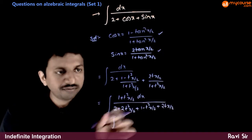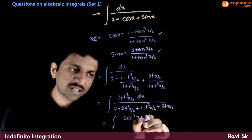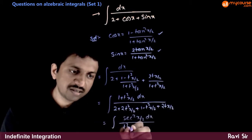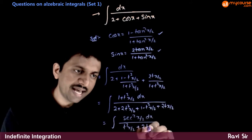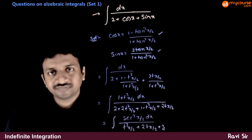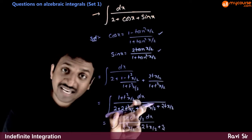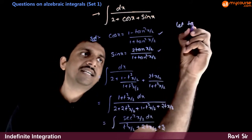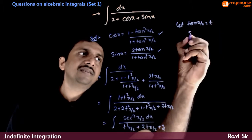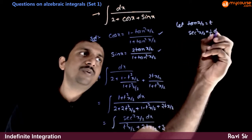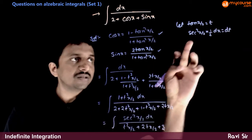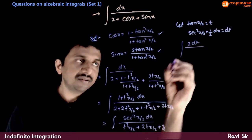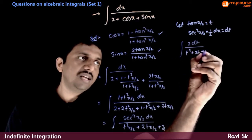That equals the integral of sec²(x/2) dx divided by (tan²(x/2) + 2 tan(x/2) + 3), since 1 + tan²(x/2) = sec²(x/2), and the denominator simplifies to tan²(x/2) + 2 tan(x/2) + 3. Now, sec²(x/2) is essentially the derivative of tan(x/2), so let t = tan(x/2), giving sec²(x/2) · (1/2) dx = dt, hence sec²(x/2) dx = 2 dt.